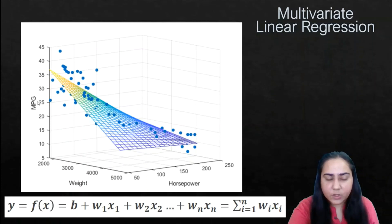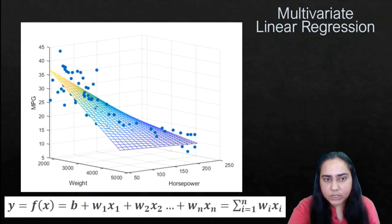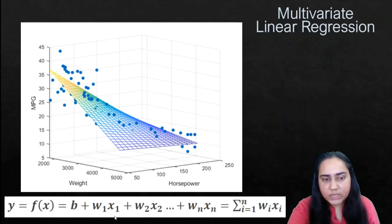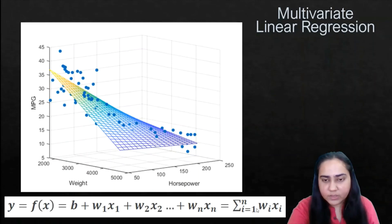The graph for multivariate linear regression is three-dimensional. For example, using vehicle data with horsepower and weight as independent variables and mpg (miles per gallon) as the dependent variable, the graph plots horsepower on one axis, weight on another, and mpg on the third axis. The actual data points appear as dots, and the regression result appears as a mesh surface. The equation is y = f(x) = b + w1x1 + w2x2 + ... + wnxn, using w for weights instead of m.